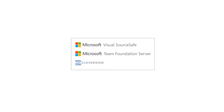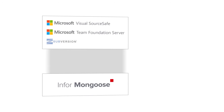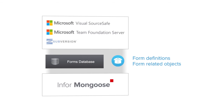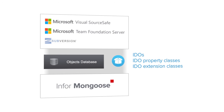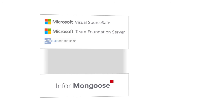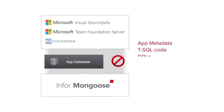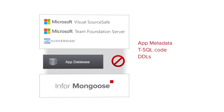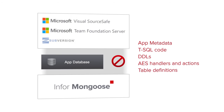Once installed and configured, the source control system specifically interfaces with Mongoose to control two basic groups of metadata: metadata that resides in the forms database, such as form definitions and form-related objects, and metadata that resides in the objects database, such as IDOs, IDO property classes, and IDO extension classes. It is worth mentioning, too, that Mongoose does not apply source control to metadata, T-SQL code, or data definition languages (DDLs) that reside in your application database, such as application event system handlers and actions, table definitions, and so on. Nor does it apply to any .NET IDO extension class source code you write. And if you are using Mongoose to extend an application from a vendor, source control does not check in or check out the vendor versions of the forms and IDO metadata — these are automatically upgraded into your application with the vendor's updates.